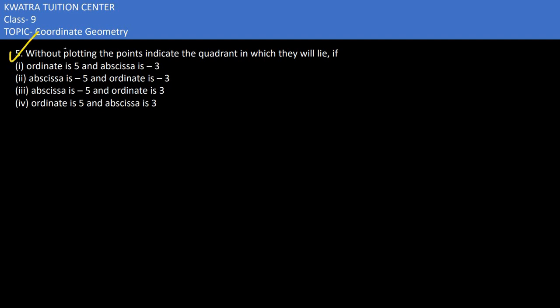Now in the fifth one, it says without plotting the points, indicate the quadrant in which they will lie. So what do we do? First of all, we know that the first quadrant is positive and positive.